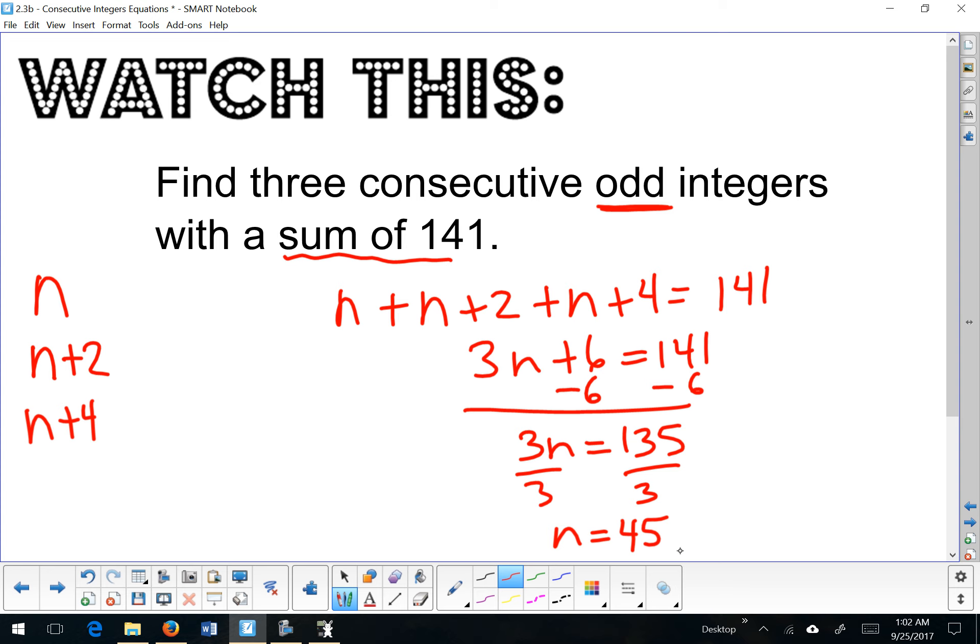I'm not going to box this because that's only part of my answer. 45 is my first, 45 plus 2 is my second, and 45 plus 4 would be my third. So that actually makes my answer 45, 47, and 49. Those are my three odd consecutive values.